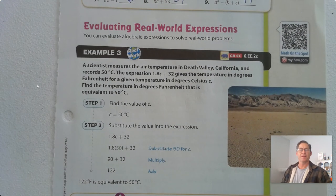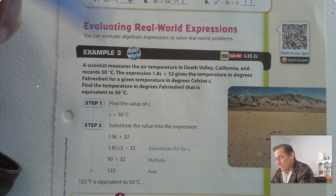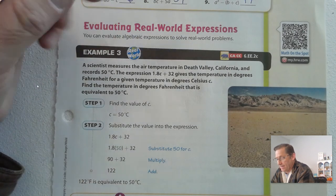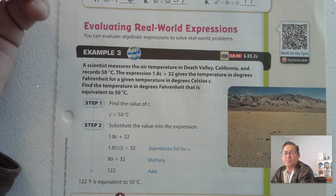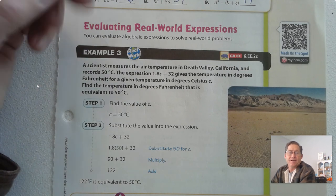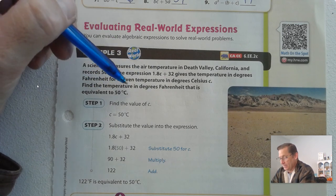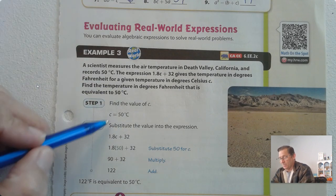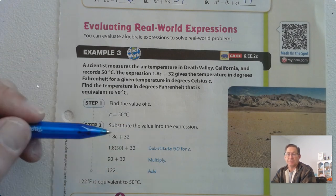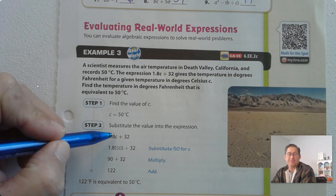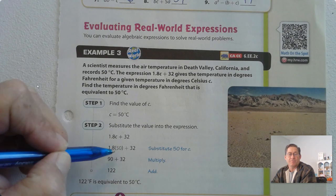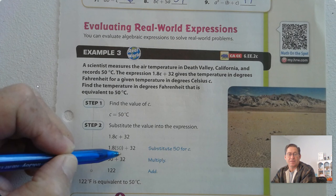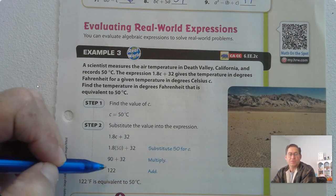Evaluating real-world expressions. You can evaluate algebraic expressions to solve real-world problems. Example 3: a scientist measures the air temperature in Death Valley, California, and records 50 degrees Celsius. The expression 1.8 times Celsius plus 32 gives the temperature in Fahrenheit. Find the temperature in Fahrenheit equivalent to 50 degrees Celsius — substitute 50 for C. So 1.8 times 50 plus 32. Multiply first: we get 90 plus 32, so 50 degrees Celsius is equivalent to 122 degrees Fahrenheit.